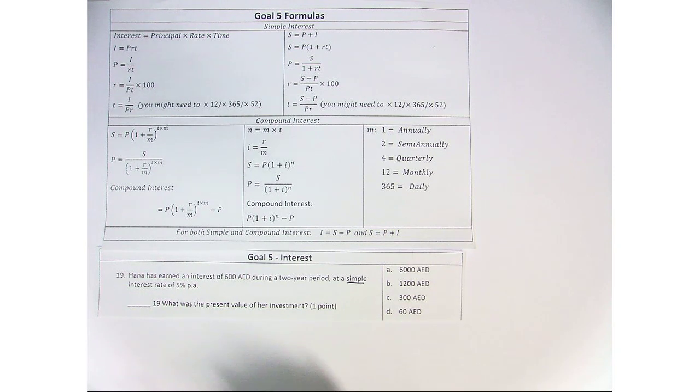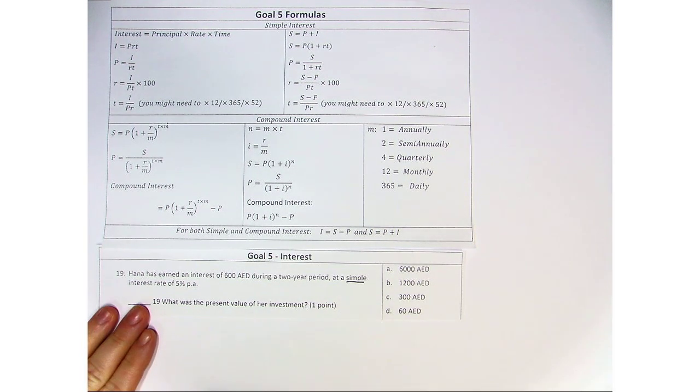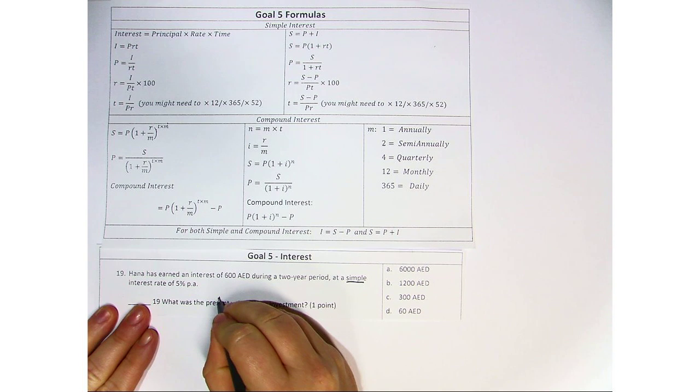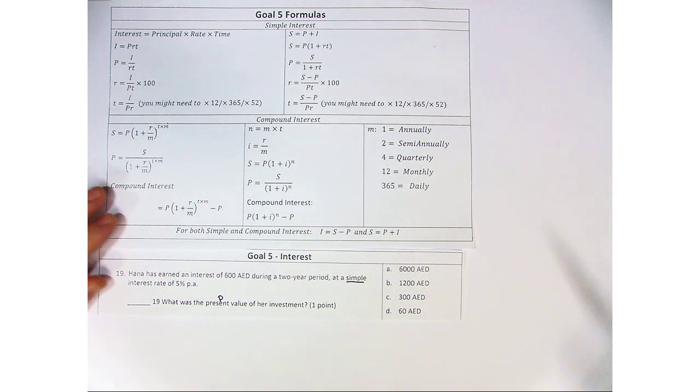And the next thing we need to know is what the question is asking for. What was the present value of her investment? So what they're asking for is P. So we come over here and we look at the formulas.